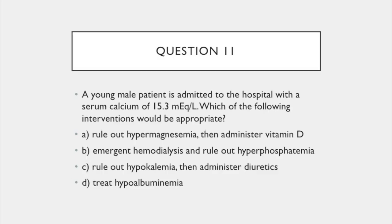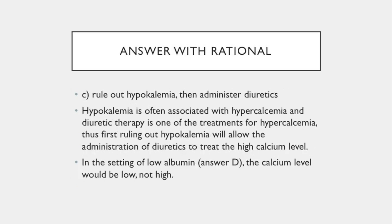Question 11. A young male patient is admitted to the hospital with a serum calcium of 15.3. Which of the following interventions would be appropriate? A. Rule out hypermagnesemia, then administer vitamin D. B. Emergent hemodialysis and rule out hyperphosphatemia. C. Rule out hypokalemia, then administer diuretics. Or D. Treat hypoalbuminemia. The answer is C: rule out hypokalemia, then administer diuretics.